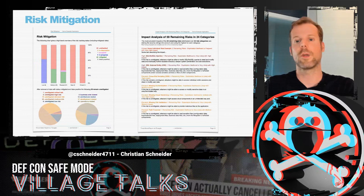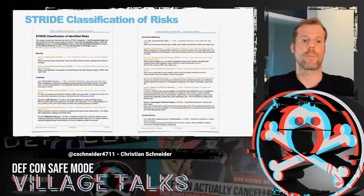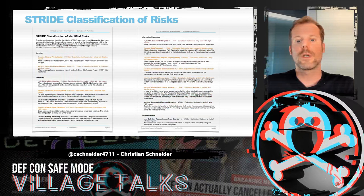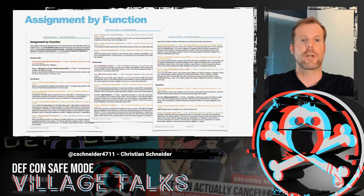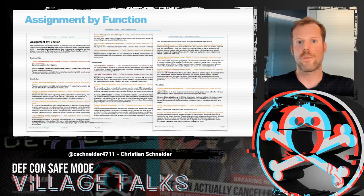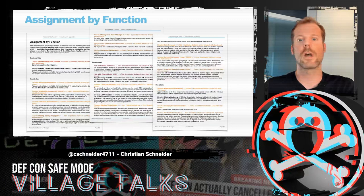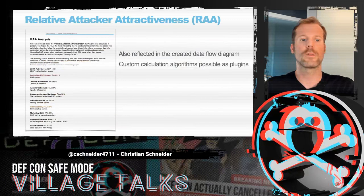Also for classic threat modeling, you have the STRIDE classification of identified risks: spoofing, tampering, repudiation, information disclosure, and other categories. You get an assignment by function — which party in your corporation or team shall handle that kind of risk — whether it's business side, architecture side, development, operations, or something like that.